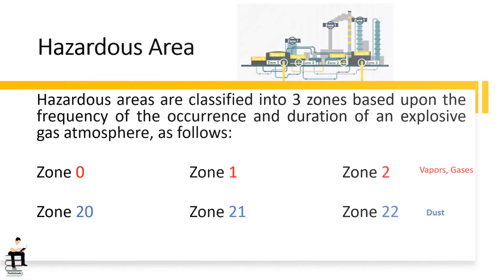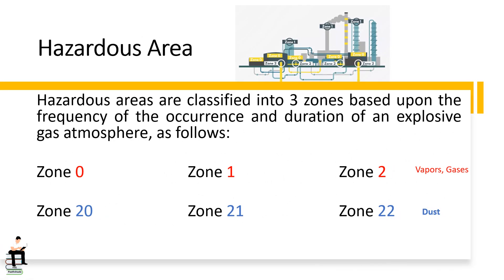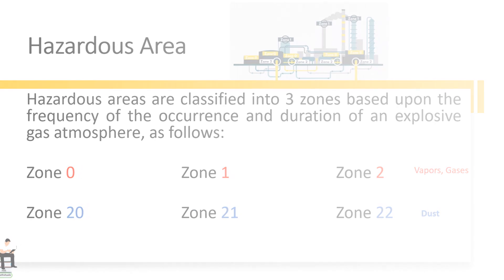Hazardous areas are classified into three zones based upon the frequency of occurrence and duration of an explosive gas atmosphere: Zone 0, Zone 1, and Zone 2 for flammable vapors or gases; and Zone 20, Zone 21, and Zone 22 for combustible dust.